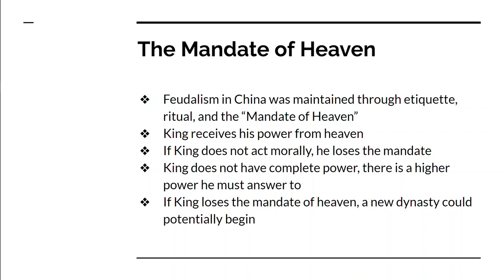The king must act morally. If the king does not have good morals and does not do what's best for his people, he could lose the Mandate of Heaven and be replaced by a new dynasty. In reality, this mandate of heaven was used whenever one dynasty was toppled and a new one replaced it — basically the new king would say the old king wasn't doing the right thing, he lost the mandate of heaven, and he needed to be replaced.